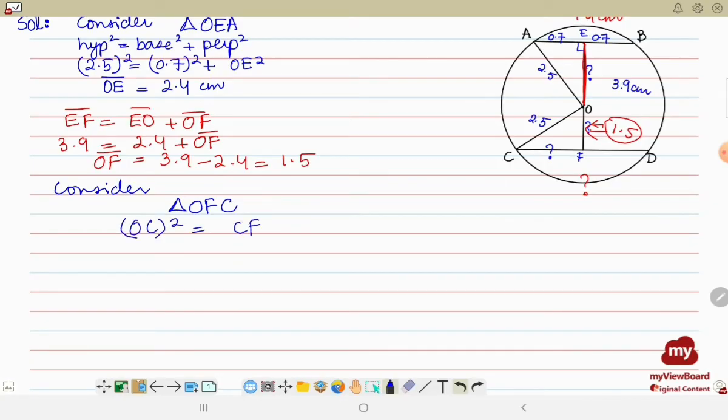Again we'll apply Pythagoras theorem. In this case, Pythagoras theorem will be applied as hypotenuse square is OC, base is CF, and then OF the perpendicular. So OC is 2.5 square, CF we have to find, and OF is 1.5. So if you solve it completely, CF will be equal to 2.